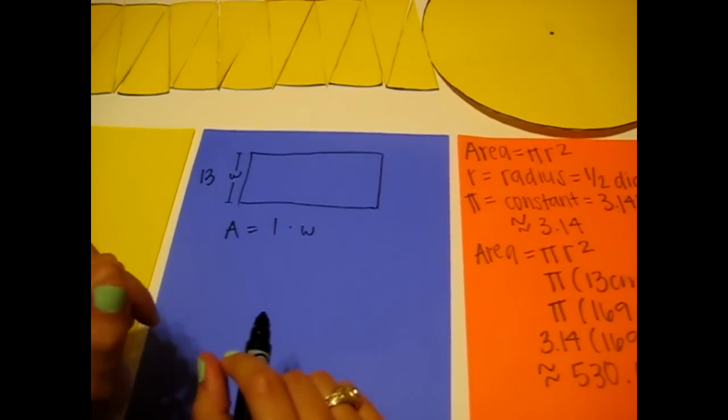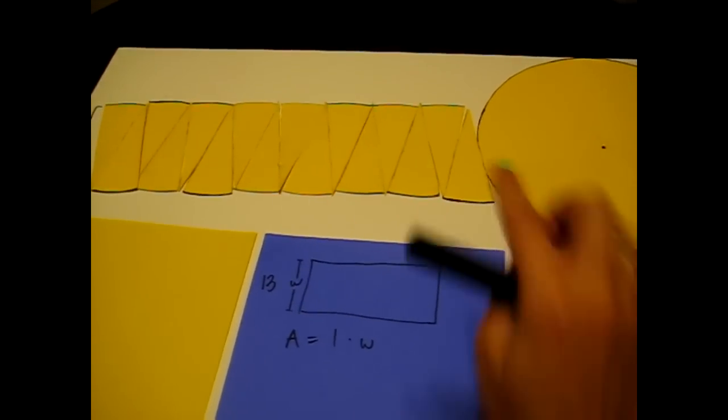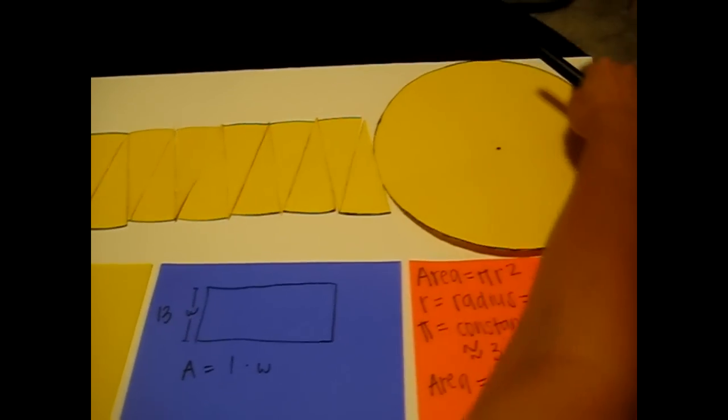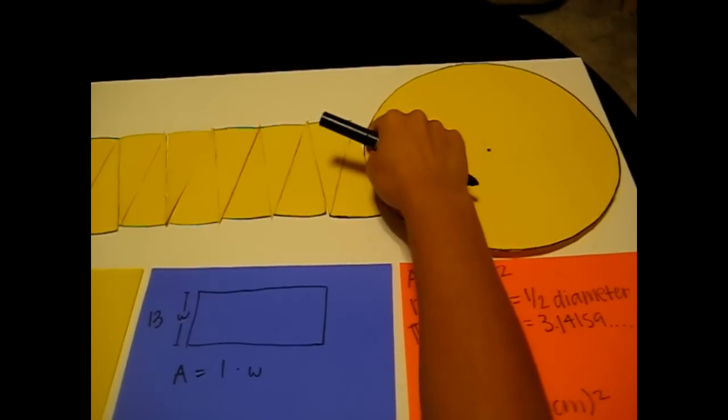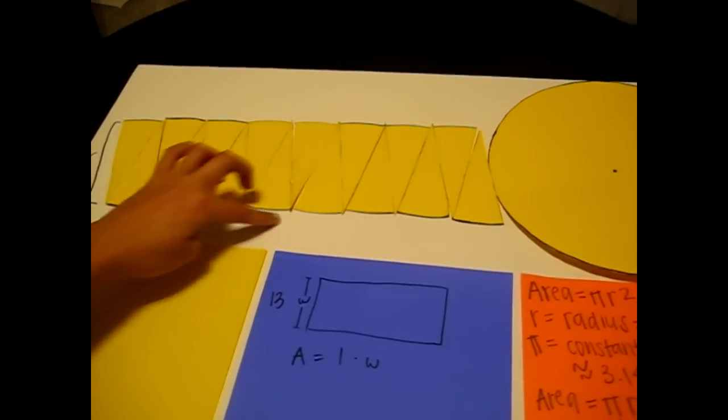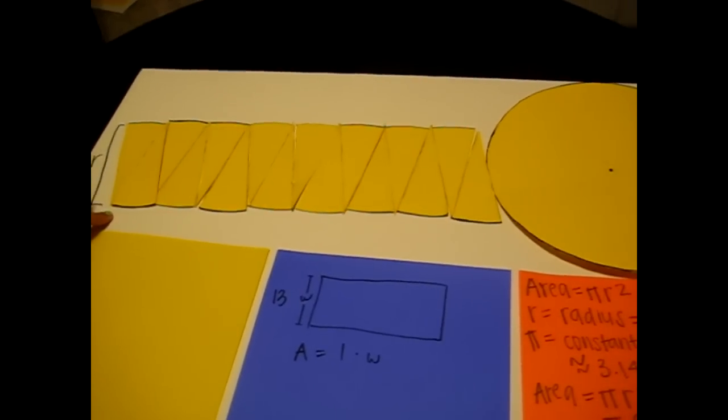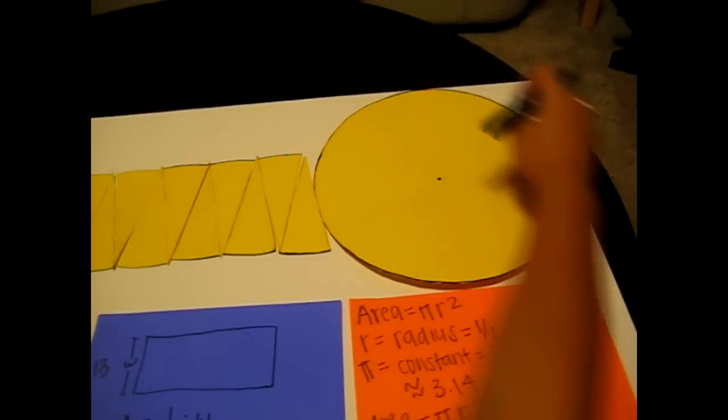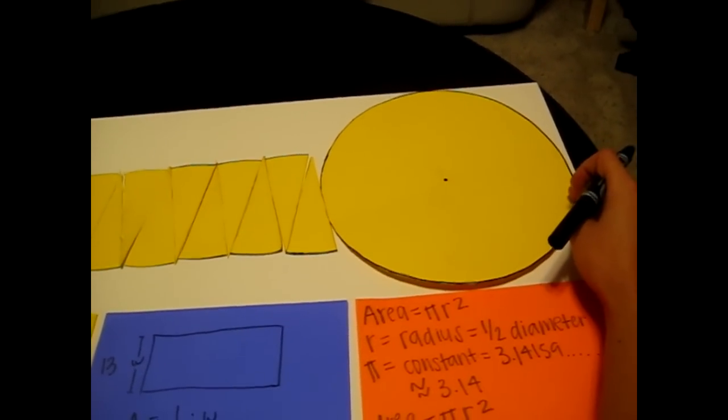Now to find our length, first we know that the circumference of a circle is the perimeter around the circle. As we can see here, the length of one bumpy side of our rectangle is equal to half of the circle's edges, or the perimeter, which is therefore half of the circumference.